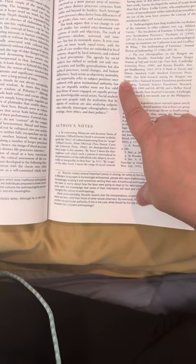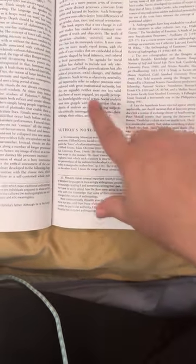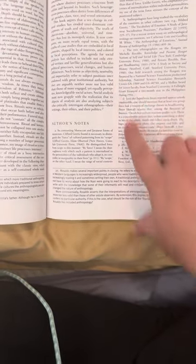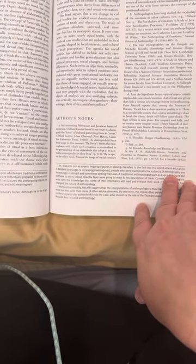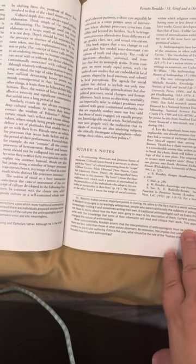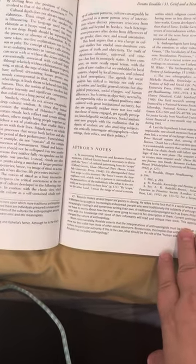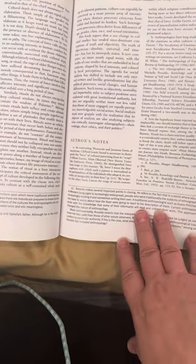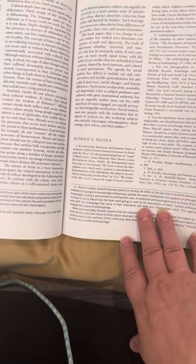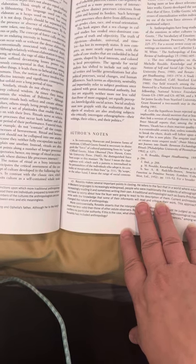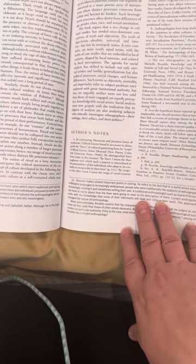The truth of objectivism, absolute, universal, and timeless, has lost its monopoly status. It now competes on more nearly equal terms with the truths of case studies that are embedded in local contexts, shaped by local interests, and colored by local perceptions. The agenda for social analysis has shifted to include not only eternal verities and law-like generalizations, but also political processes, social changes, and human differences. Such terms as neutrality and impartiality refer to subject positions once endowed with great institutional authority, but they are arguably neither more nor less valid than those of more engaged yet equally perceptive knowledges. Social analysis must now grapple with the realization that its objects of analysis are also analyzing subjects who critically interrogate ethnographers, their writings, their ethics, and their politics.